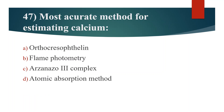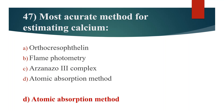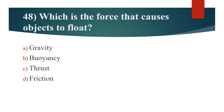Forty-seventh question. Most accurate method for estimating calcium. Option A: Orthocresolphthalein. Option B: Flame photometry. Option C: Arsenazo three complex. Option D: Atomic absorption method. Answer is Option D: Atomic absorption method.